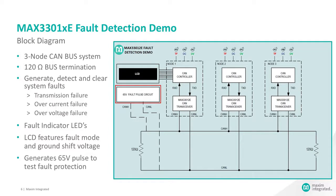This is the block diagram for the CAN fault detection demo. The demo is a 3-node system. All the nodes are connected to a 120 ohm bus. Each node consists of a CAN controller and MAX33012E transceiver. A fault generation circuit generates various system faults on the bus. Each node is provided with fault LED indicators. The LCD displays the fault information and the ground shift voltage.